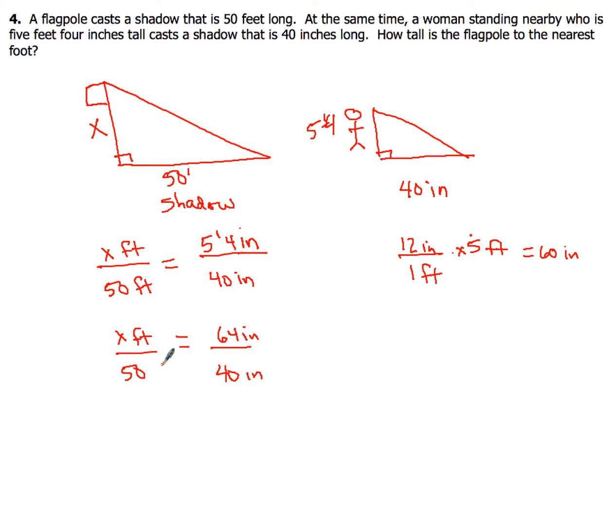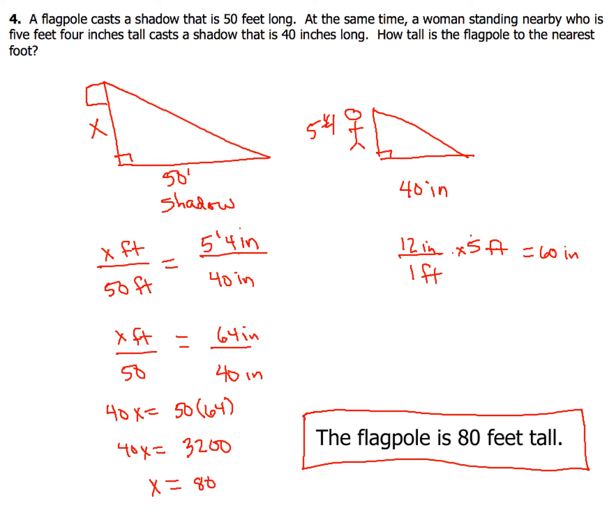When you get your answer, don't forget — re-read the question and answer in a complete sentence. Hopefully you got a height of 80 feet. Write: 'The flagpole is 80 feet tall.' That sentence should answer the question — always do that last step.